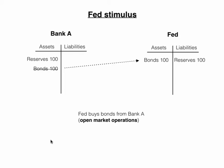We saw how the banking system creates money by making loans in a fractional reserve banking system. Now we're going to talk about how the Fed is going to come in and stimulate the economy using expansionary monetary policy. The way it does that is through what's called open market operations, which just means the buying and selling of bonds with commercial banks.